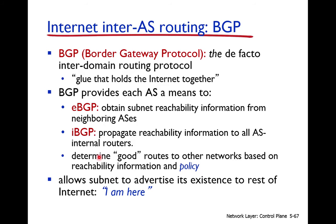One key difference between intra-autonomous system and inter-autonomous system routing protocols is that in BGP the best or good path is selected based on policy. In link state or distance vector protocols, the best path is the one with least cost, least distance, least traffic, least congestion, or most bandwidth. But in inter-autonomous system routing, the good path is one which is reachable and allowed as per policy.